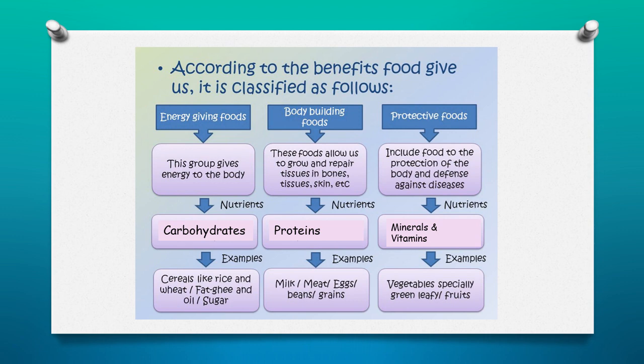Now let us move ahead to body-building food. These foods allow us to grow and repair the tissues in the bones, tissues, skin, etc. The nutrients obtained from body-building food are proteins. We get proteins from milk, meat, eggs, beans, pulses, grains, etc.